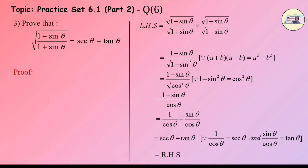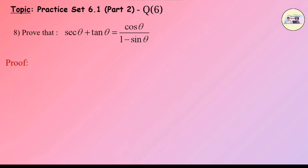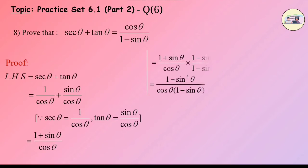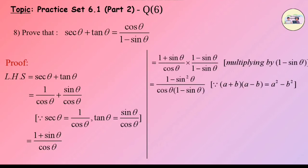Sub Question 8: Prove that secθ + tanθ = cosθ/(1 - sinθ). Proof: LHS = secθ + tanθ = 1/cosθ + sinθ/cosθ, since secθ = 1/cosθ and tanθ = sinθ/cosθ, which equals (1 + sinθ)/cosθ.